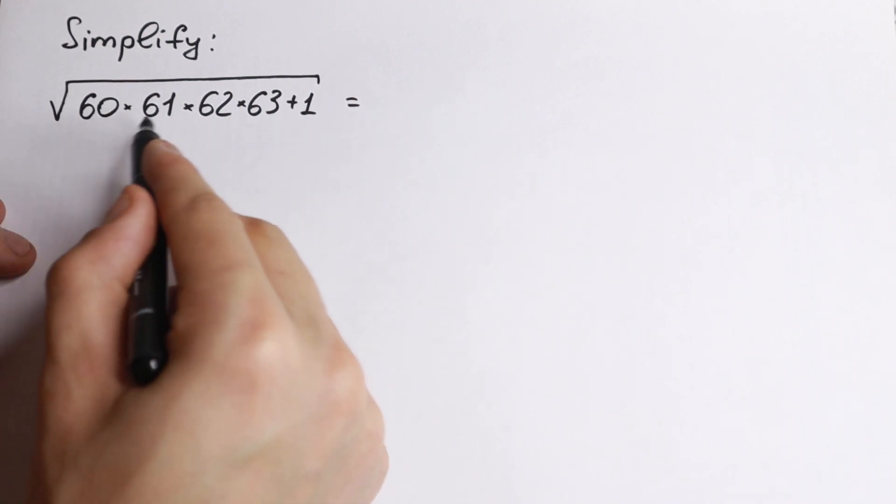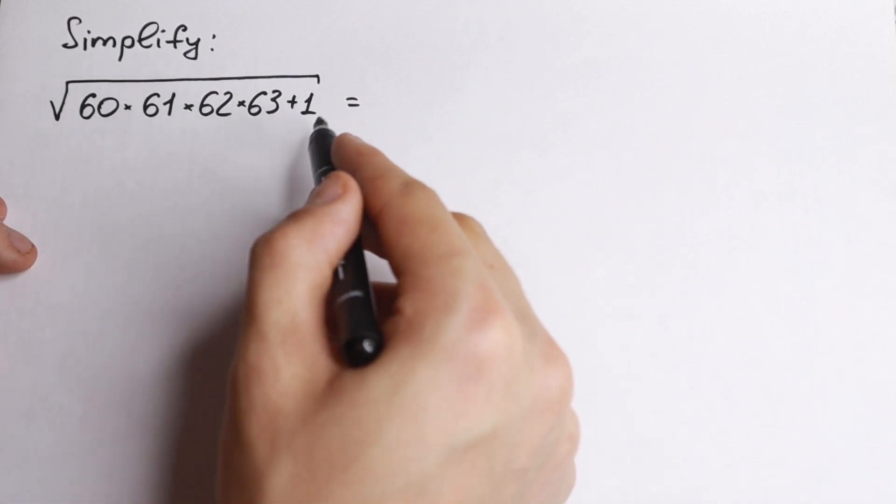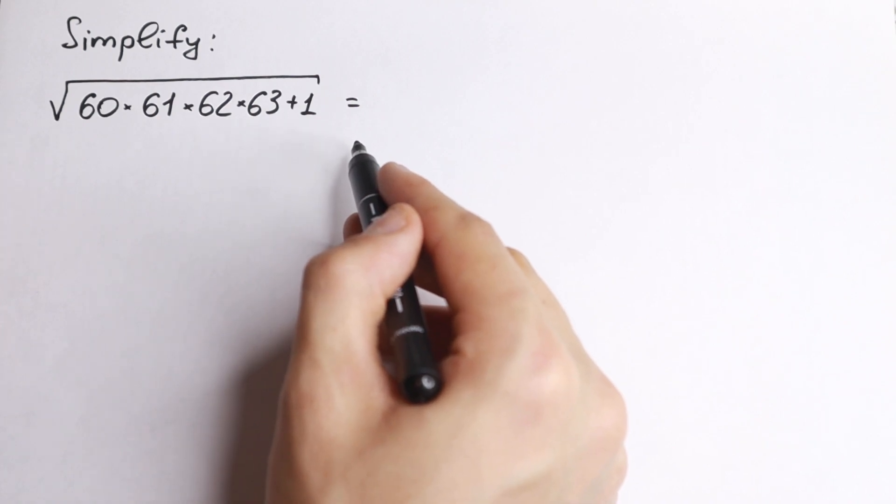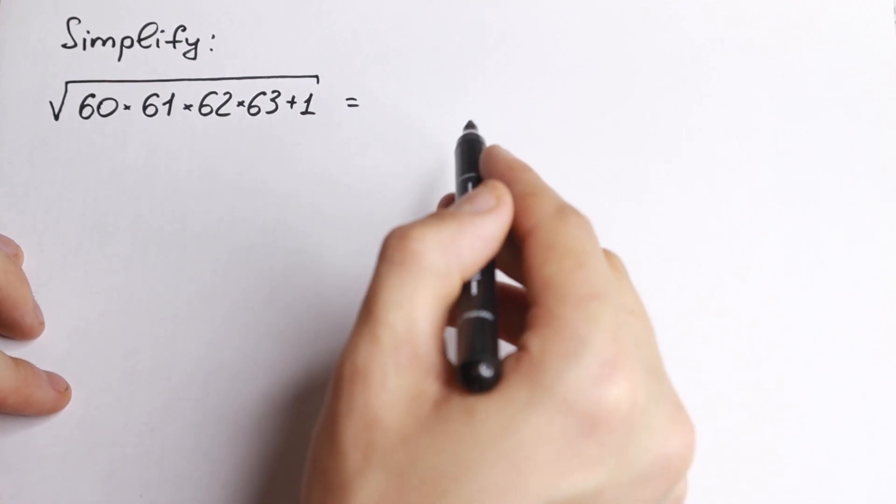We have a square root of a long product, we have 60, 61, 62, we're multiplying it and in the end we add 1. How could we solve it? On the first side we can multiply it in our telephone, but it's not our case and we need to find tricks because we learn math, we need to find our math tricks right here.